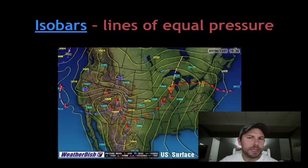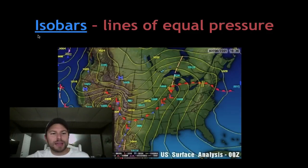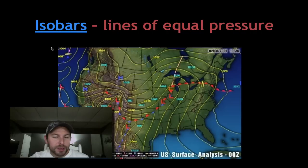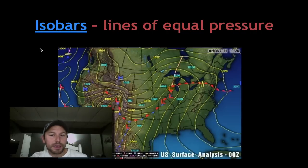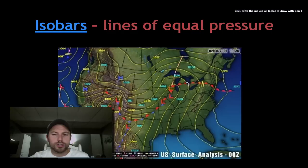The first thing to know about pressure systems is that when we measure them and plot them on a map, they are known as isobars. So lines of equal air pressure are known as isobars. Very similar to when we have topographic maps where lines of equal elevation are called contour lines. Here, lines of equal air pressure are called isobars. So we have a map like this, a very typical map that we might see on any weather or news channel.